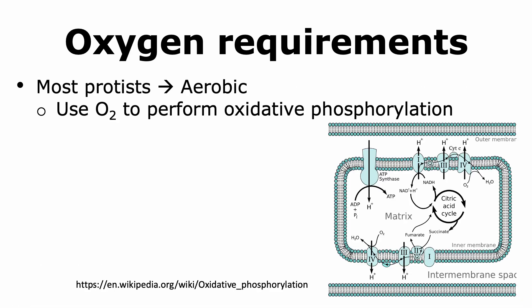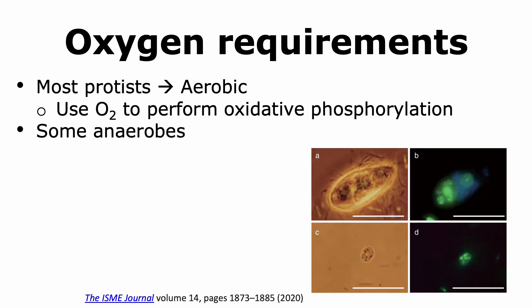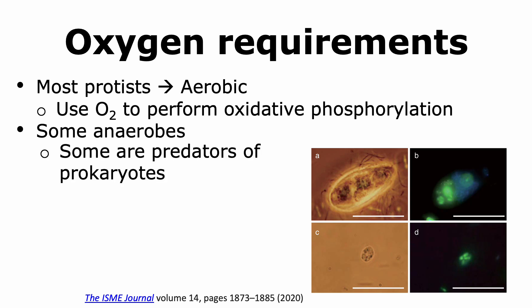Most protists are aerobic organisms, and hence they use oxygen in the electron transport chain to perform oxidative phosphorylation that aids in the production of ATP. There are some protists that are anaerobes, and scientists have found that some of these anaerobes are actually predators of prokaryotes — they are able to ingest prokaryotic cells, as shown in figures where green areas represent prokaryotic organisms like bacteria. Some other protists that are anaerobes are found to be parasites as well. Thus, different protists have different oxygen requirements.